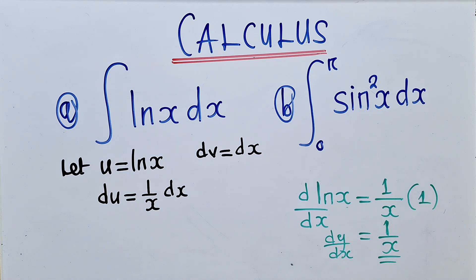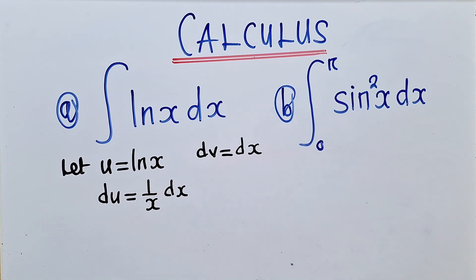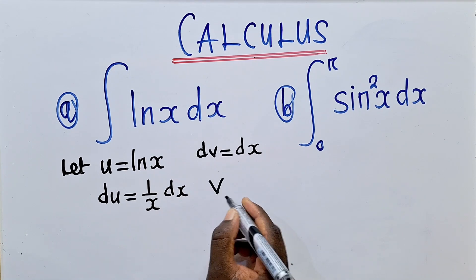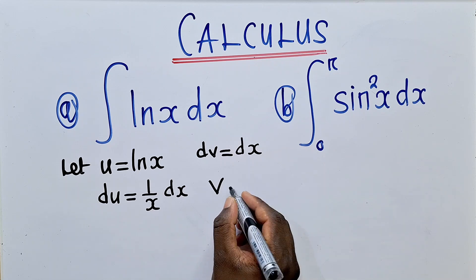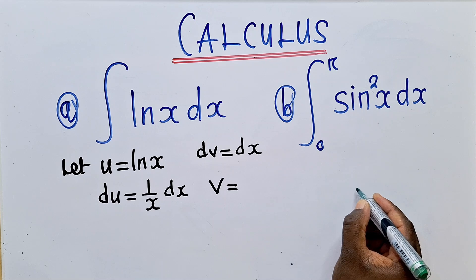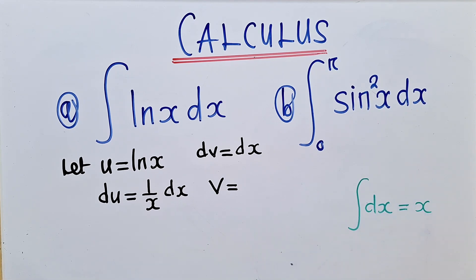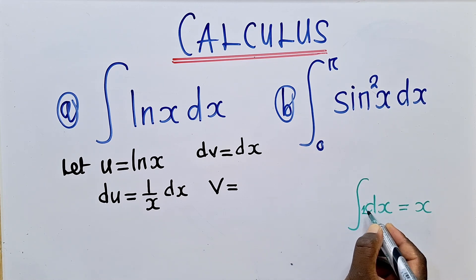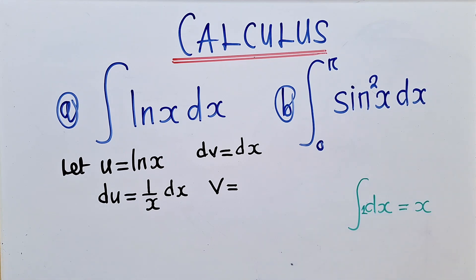So I hope you are following and able to see how all these things are coming about. From here, you now find your v — very important. v is coming from dv. You saw du came from u; dv is giving us v. Now, to find v, we're going to find the integral of dx. What is the integral of dx? The integral of dx will simply be equal to x, since we are integrating 1 with respect to x — the integral of 1 is 1x, which is just x.